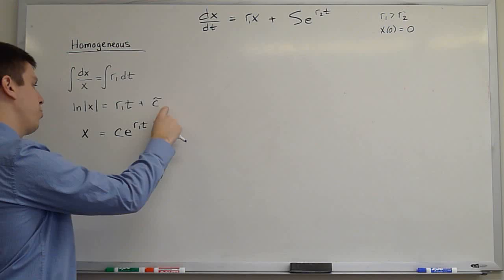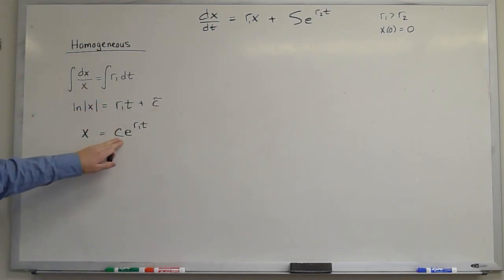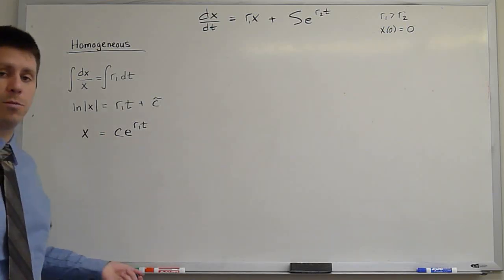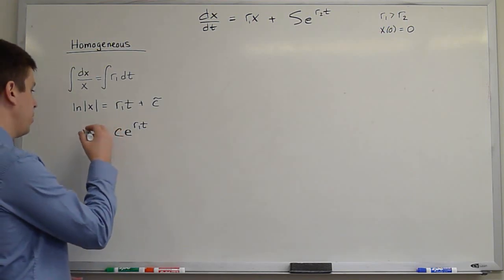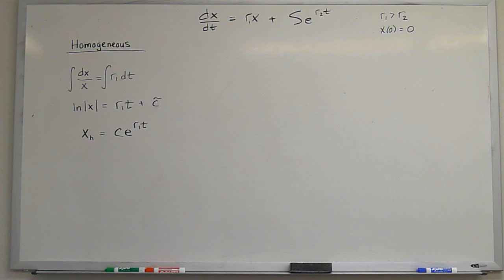The c tilde is replaced by, and the absolute value signs on the x are both replaced by this regular constant c, which is anything between minus infinity and infinity, as we saw on the first week. So here's the homogeneous solution: x_homogeneous = c*e^(r1*t).